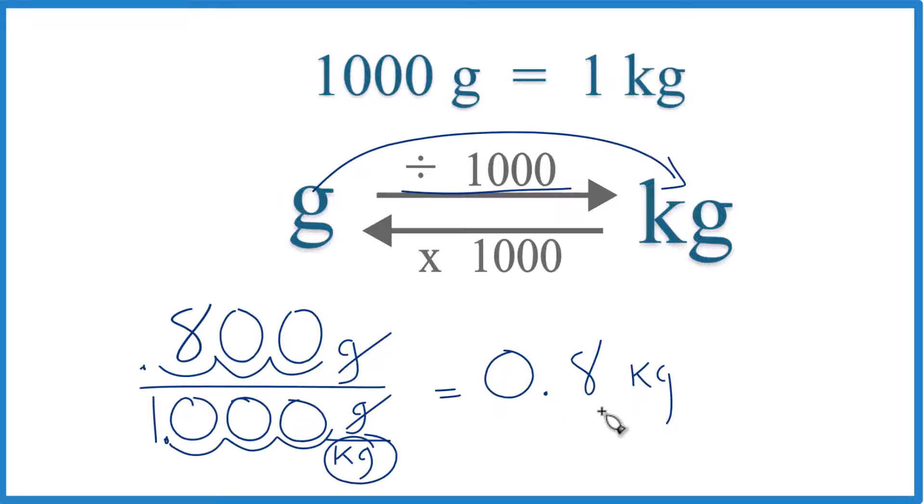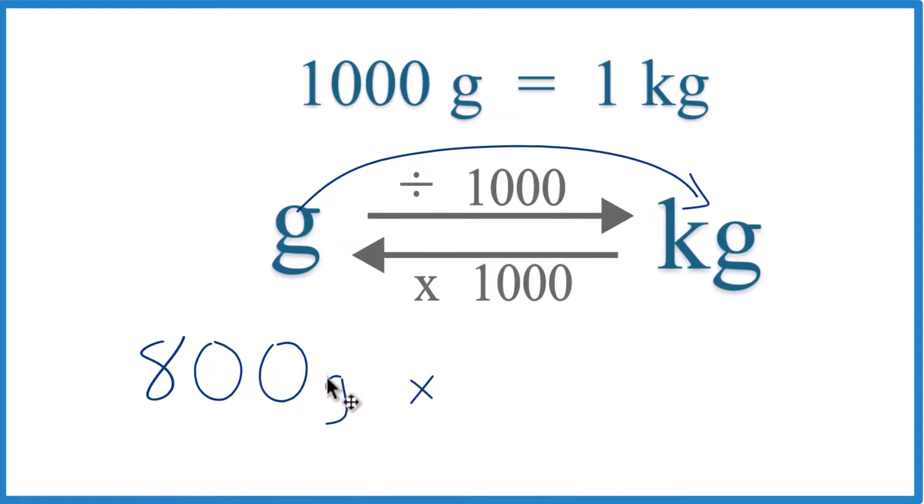Sometimes teachers will want you to multiply by a conversion factor. It's the same idea. Let's give it a try. So we have grams on top, we want to have grams on the bottom so they cancel out. So this will be our conversion factor here. One kilogram equals 1,000 grams.